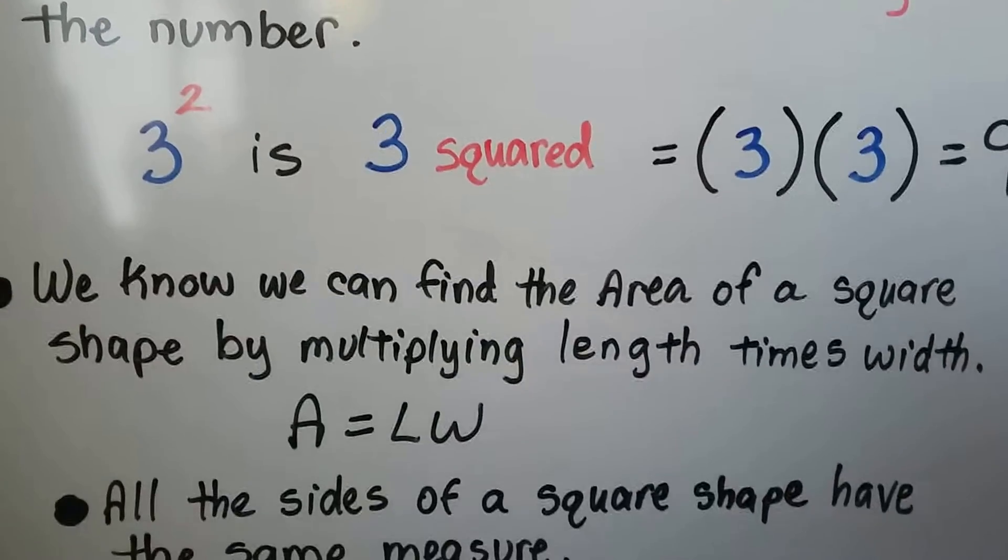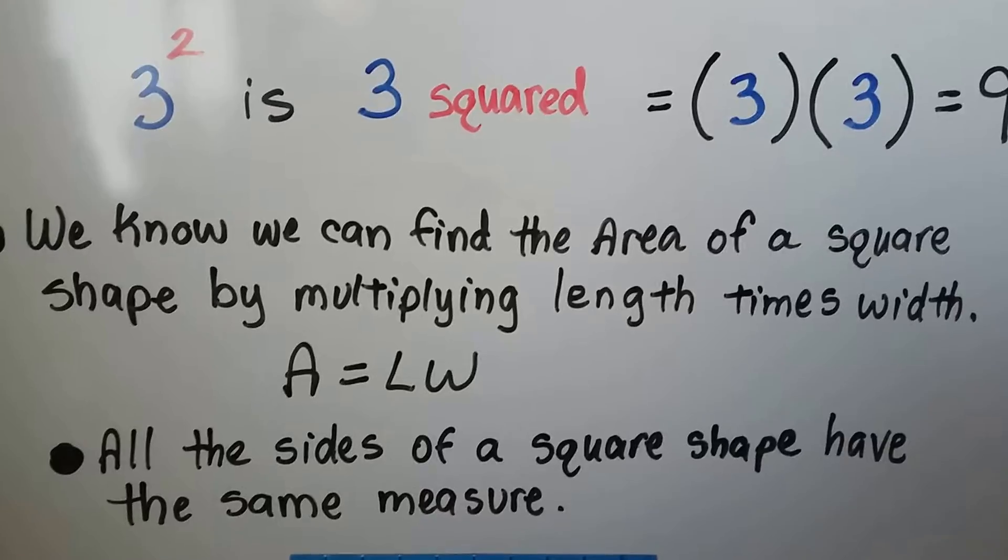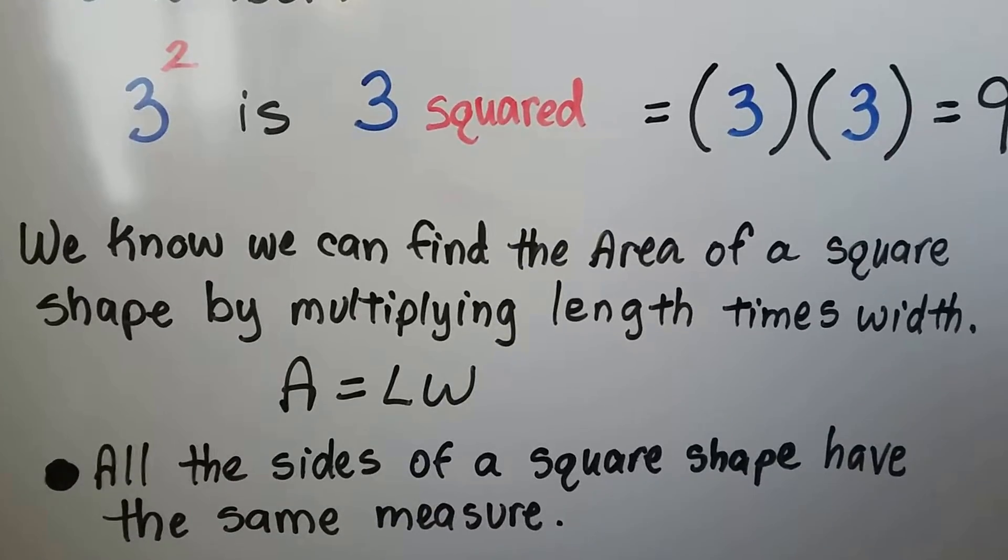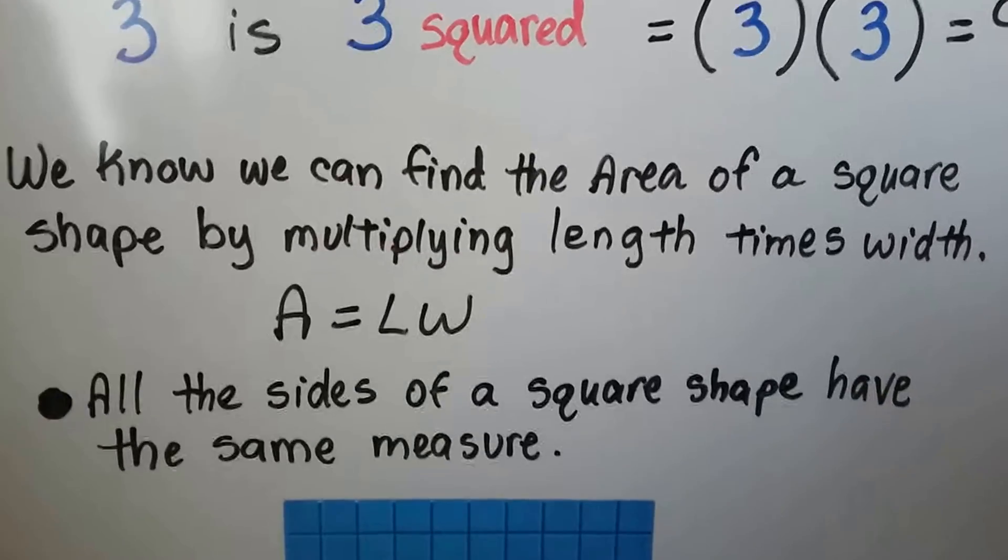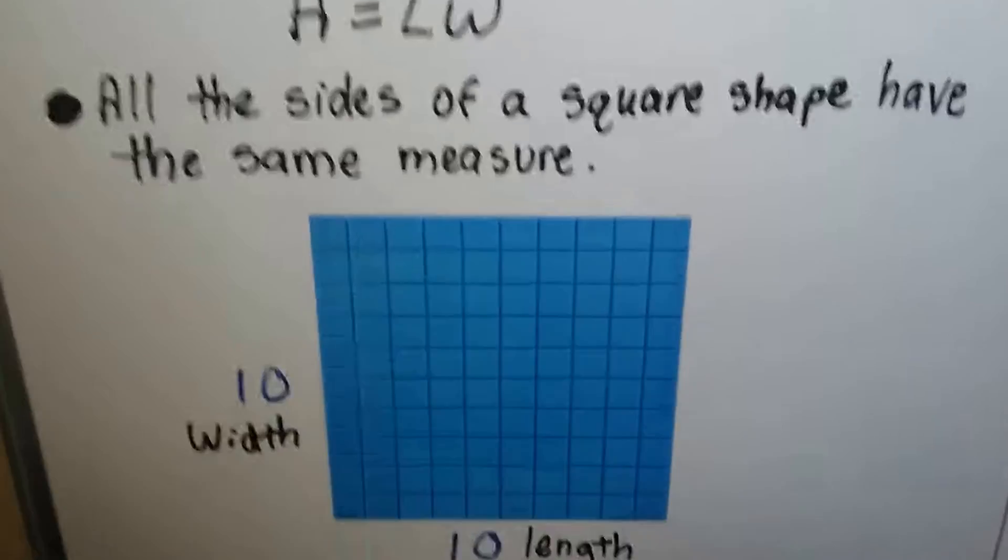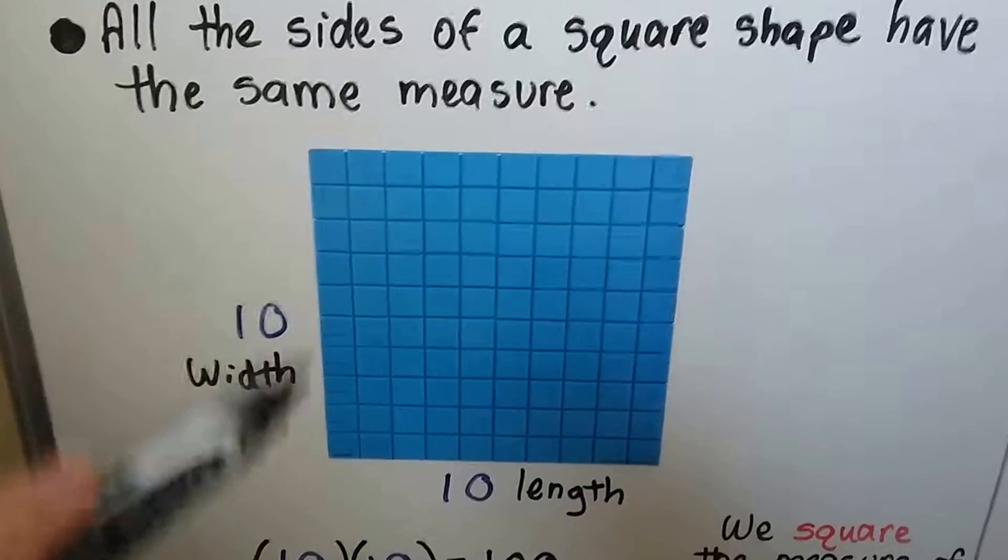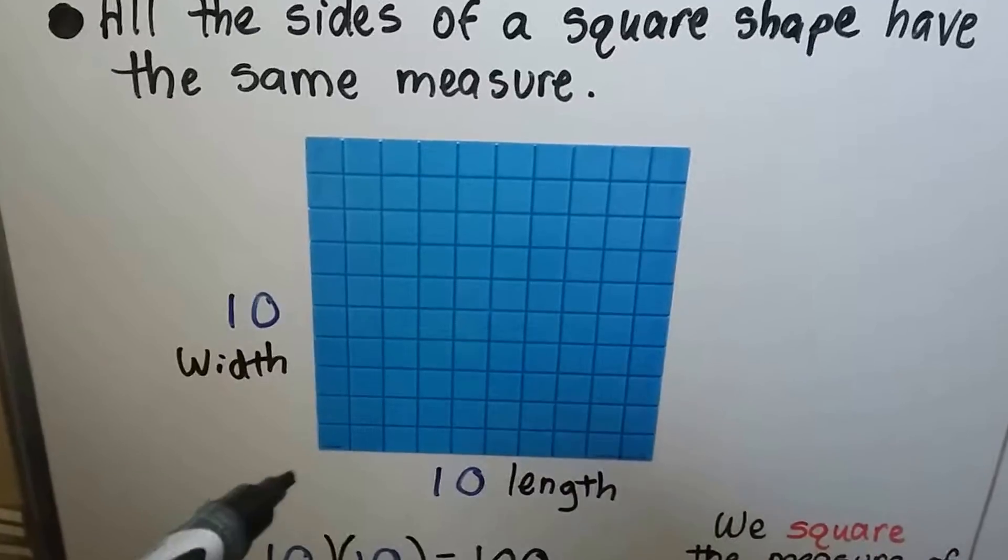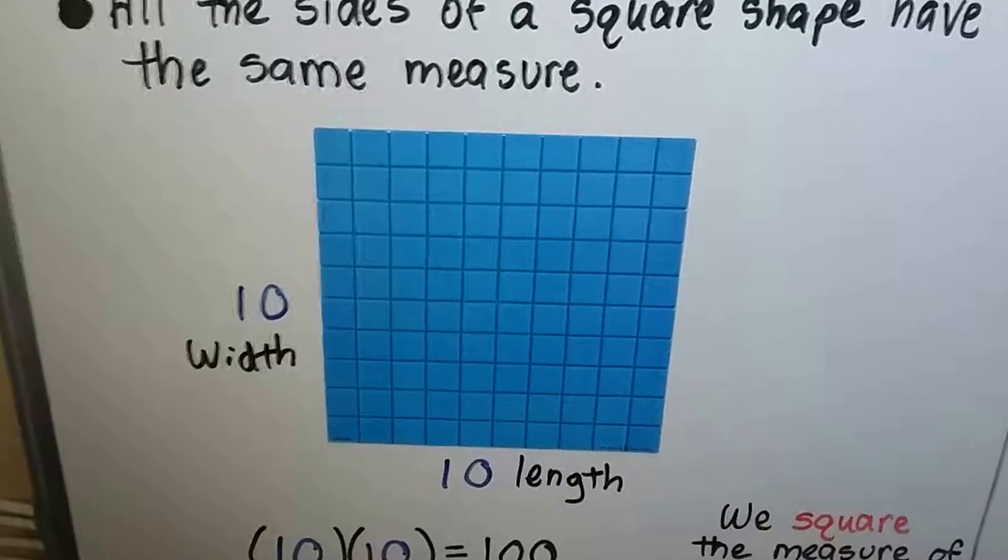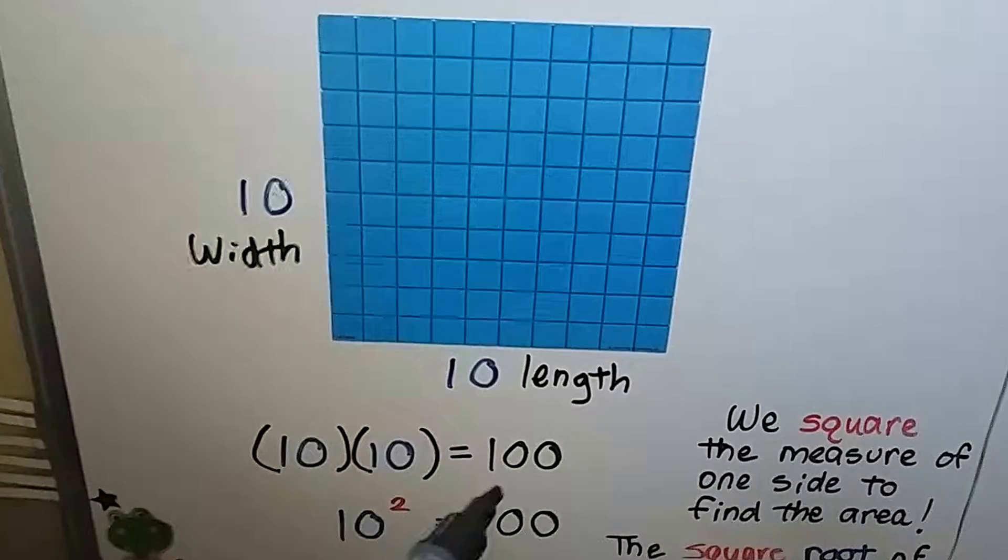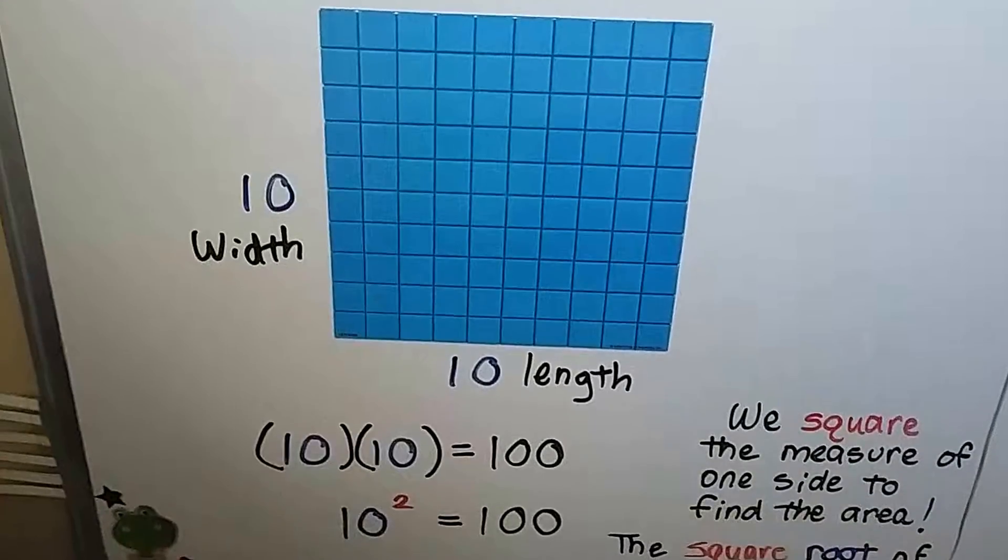We know we can find the area of a square shape by multiplying length times width. Even for a rectangle, area equals length times width. All the sides of a square shape have the same measure. So here we have a square, and it's got 10 units width and 10 units length. We can find the entire area in here by doing 10 times 10.